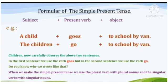Carefully observe the above two sentences. In the first sentence we use the verb 'goes,' but in the second sentence we use the verb 'go.' When we make simple present tense, we use plural verbs with plural nouns and singular verbs with singular nouns.